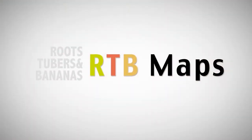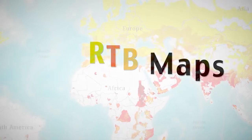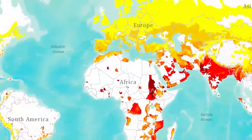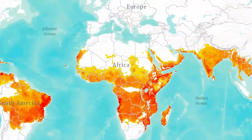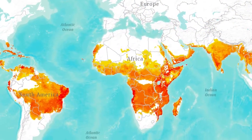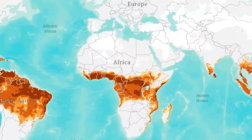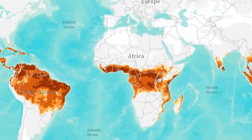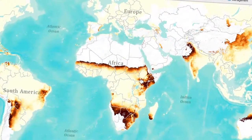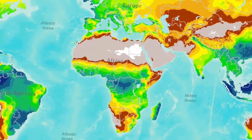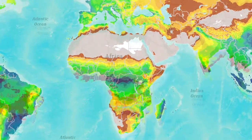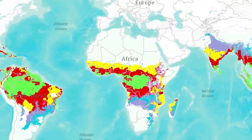RTB Maps is an interactive online tool for understanding the geographic dimensions of roots, tubers and bananas. It consists of a collection of digital, online, interactive maps that make geographic information more accessible. Those maps depict the most recent data on RTB crop distribution, abiotic and biotic constraints, RTB agricultural biodiversity, and the socio-economic conditions of the people who depend on RTB crops.